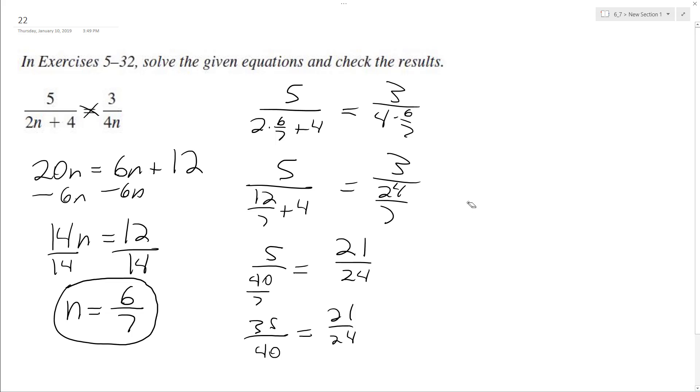If I divide through by 5, it ends up being 7 over 8. And if you divide through by 3 on the right side, you get 7 over 8.